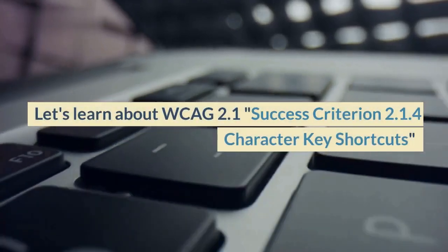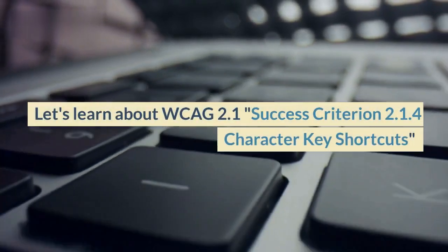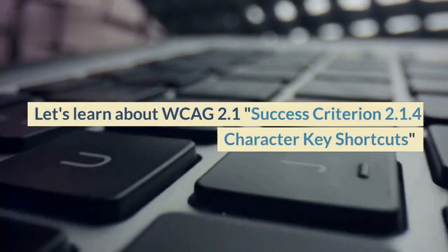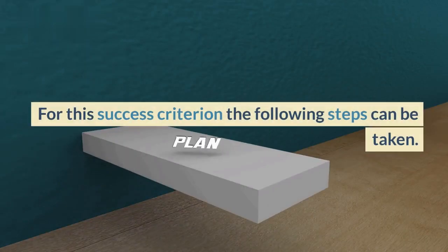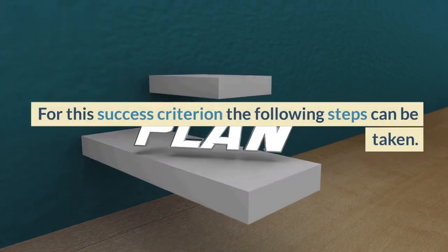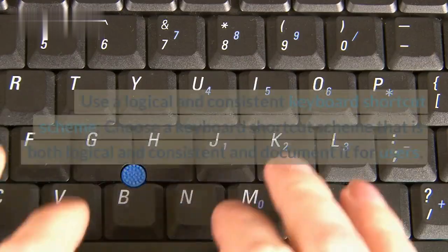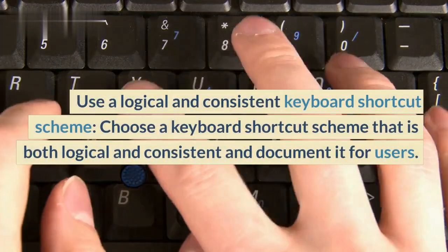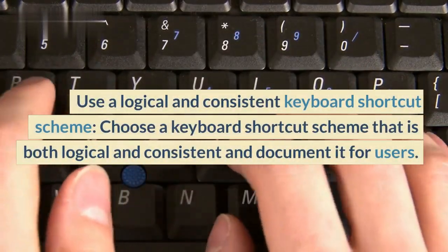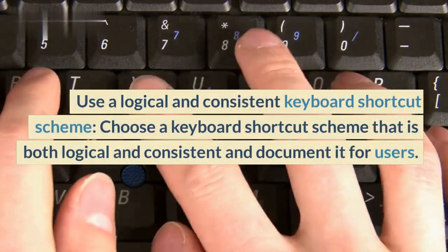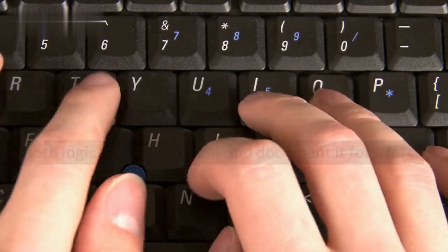Let's learn about WCAG 2.1 Success Criterion 2.1.4 Character Key Shortcuts. For this success criterion, the following steps can be taken. Use a logical and consistent keyboard shortcut scheme — choose a keyboard shortcut scheme that is both logical and consistent, and documented for users.